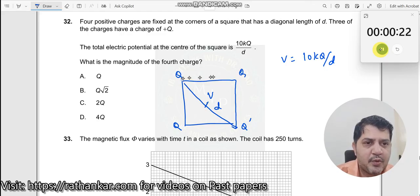So what should I do? See, potential is scalar, so therefore it does not depend on the direction. So therefore I will have kq by d divided by 2 multiplied by 3, right?